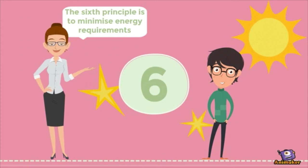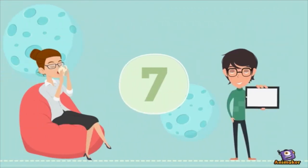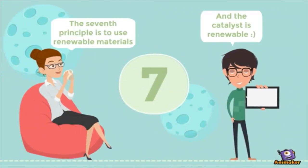The sixth principle is to minimize energy requirements, and there is a reduction of 83% by using the enzyme as a catalyst. The seventh principle is to use renewable materials, and the catalyst is renewable.